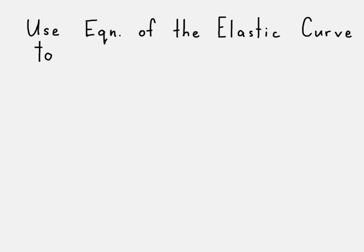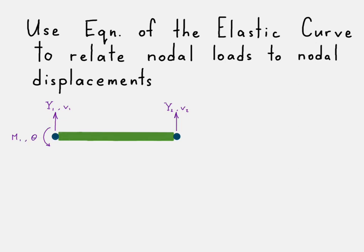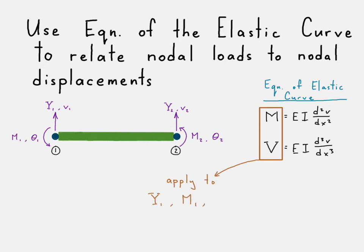Now we're going to use the equation of the elastic curve, which relates our nodal forces and moments to the nodal displacements and rotations. Drawing out our element again, here is each of the nodal displacements and rotations, as well as the nodal transverse forces y1 and y2, and moments m1 and m2. The equation of the elastic curve is as follows: the moment is equal to elastic modulus times the area moment of inertia times the curvature. Shear is equal to EI multiplied by the derivative of the curvature — the third derivative of v with respect to x. We simply take those and apply them to our nodal forces y1 and y2, and moments m1 and m2.